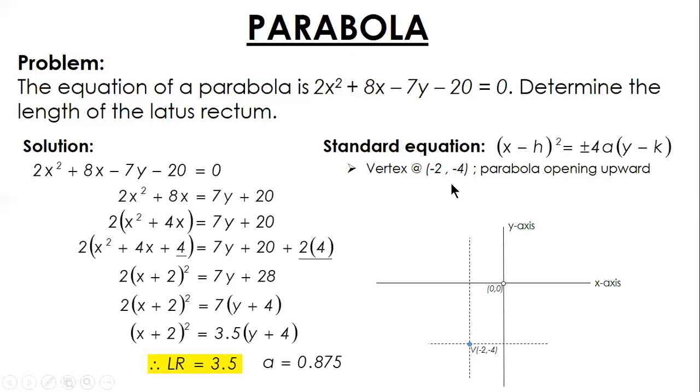After the vertex, you can plot the focus and also the directrix. We know that the distance from the vertex to the focus is a. Since our a is 0.875, then for its coordinates, from the vertex you go up by a. So the y, which is -4, plus 0.875, you have -3.125. While for directrix, you go down by distance a. -4 minus a, and you have this. This is the equation of the directrix.